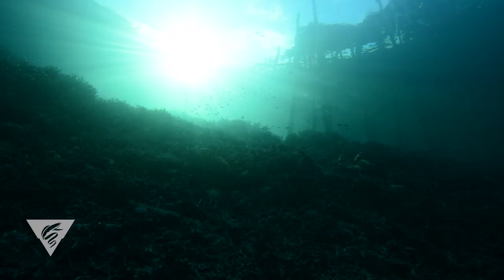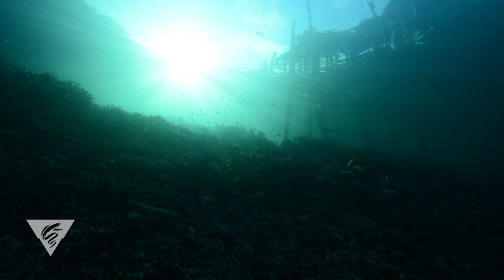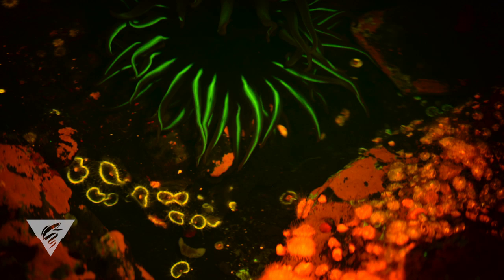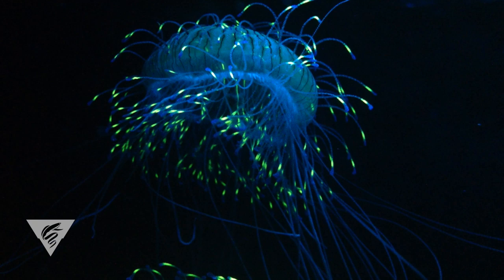In the ocean, fluorescence allows animals to transform blue light into a full palette, enabling a variety of colorful displays. Our experiments and field observations show, for the first time, that one important function of these bright colors is to attract prey to their ultimate demise.